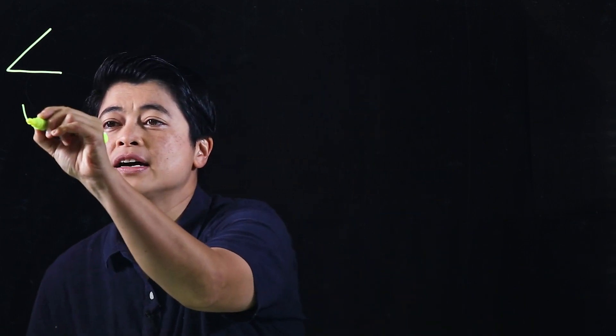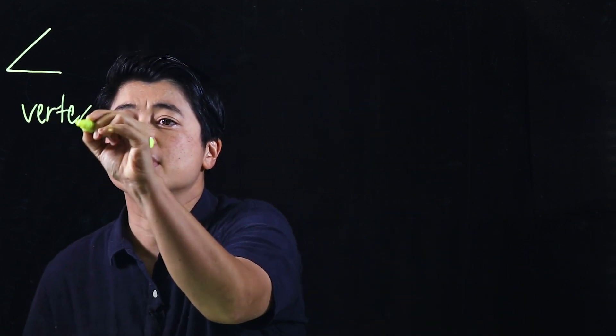Chapter five, lesson one is understanding and measuring angles. We're now moving away from computations and going into geometry. Angles are usually symbolized with that sign, and the angle has a vertex.